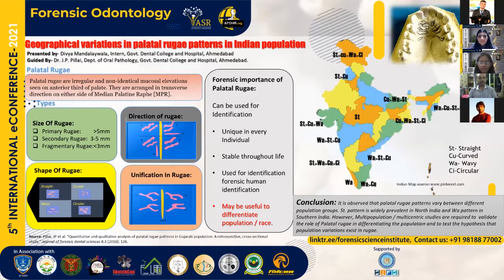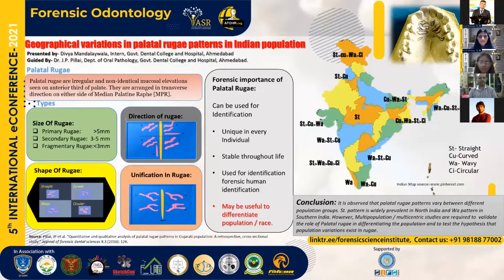The types of palatal rugae can be classified based on size as primary, secondary, and fragmentary. Based on shape, they can be classified as circular, wavy, straight, and curved. My poster today is based on these criteria — the variations present in the Indian population in the patterns of palatal rugae.